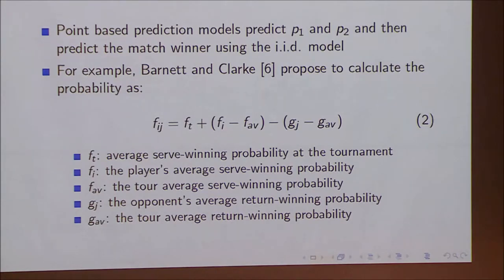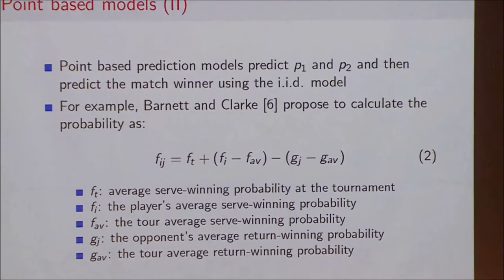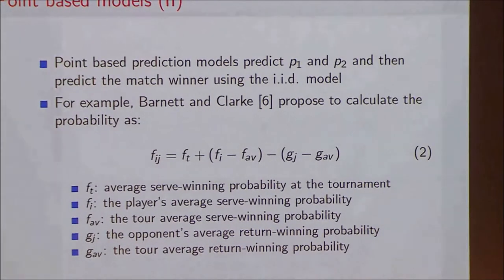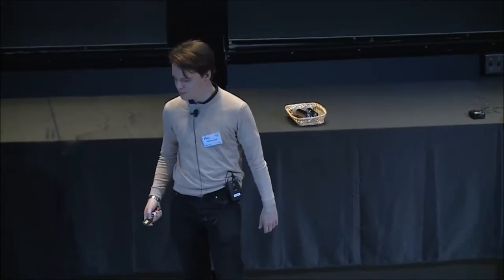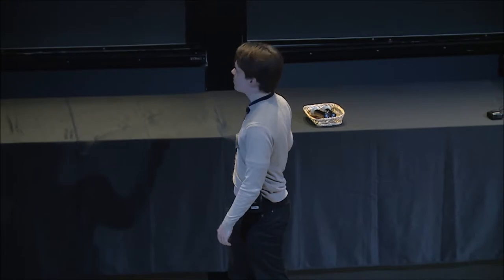How do you use point-based models for tennis prediction? The task just becomes to estimate two probabilities, P1 and P2. One of the classic models which does pretty well is Barnett and Clark. They calculate the probability with a tournament offset term — allowing for the fact that at some tournaments it's easier to win a point on serve than others — plus a term for how much the current server's average probability differs from the tour average, and a second term for how much better the returner is than the tour average.